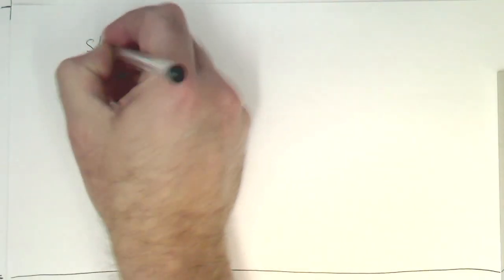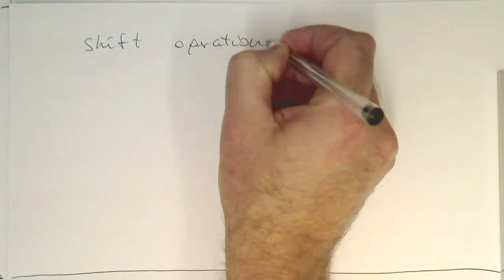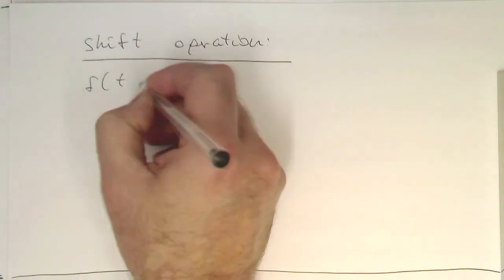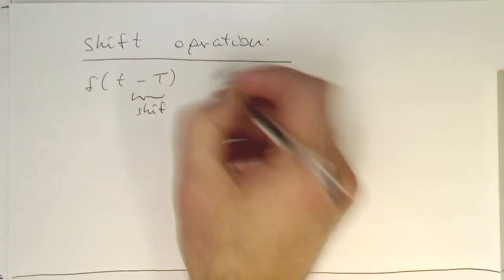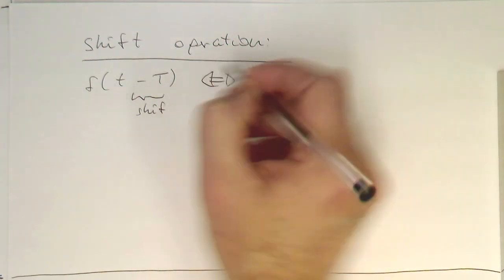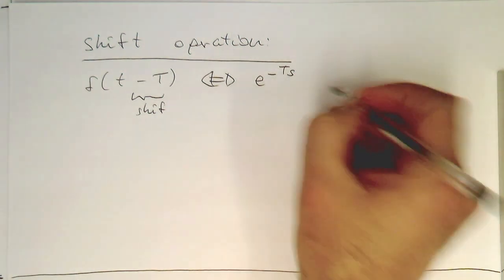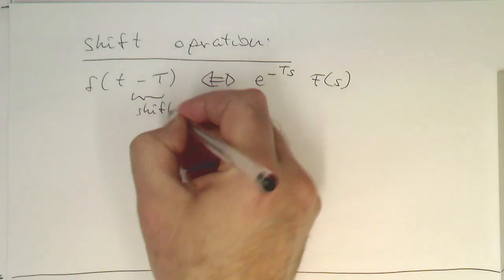Let's introduce something which is really important for our digital processing later on, and that's the shift operation. So if we have something like f of t minus capital T — so that's our shift — then in Laplace space, this is the multiplication with an exponential e to the minus T·s, and then F of s.